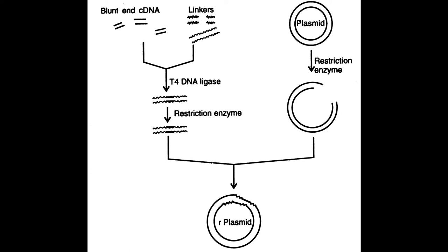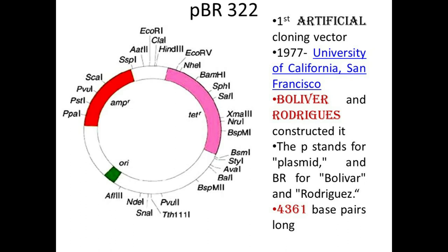What we do is connect our foreign gene with the plasmid. The foreign gene is cut with a restriction enzyme, linked to a cut plasmid vector, and we get a new DNA called recombinant DNA — containing the vector DNA as well as the foreign DNA — which is then transferred into a bacterial host cell. A commonly used plasmid is PBR322, an artificial cloning vector developed by Bolivar and Rodrigues in 1977 at the University of California.